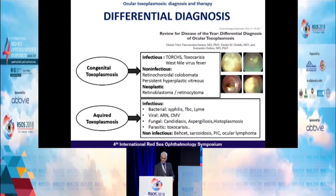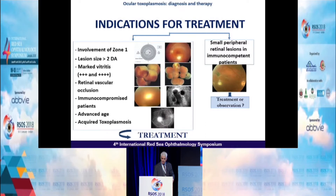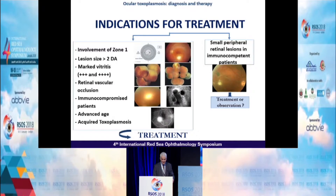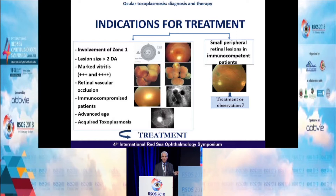Differential diagnosis in congenital Toxoplasmosis includes numerous infectious and non-infectious diseases, as does acquired Toxoplasmosis. Indications for treatment include involvement of zone 1, large lesions, marked vitritis, retinal vascular occlusion, all immune-compromised patients, patients with advanced age, and acquired Toxoplasmosis. Patients with small peripheral retinal lesions who are immune-competent may be either treated or observed.